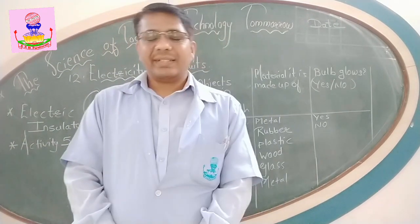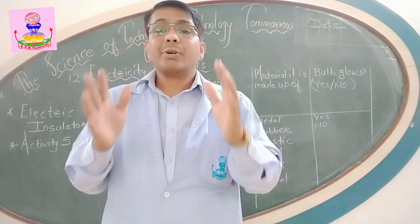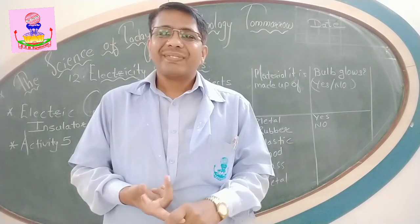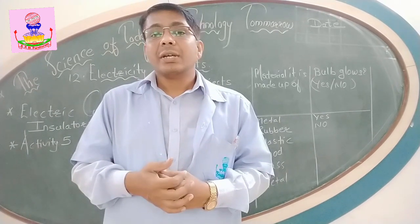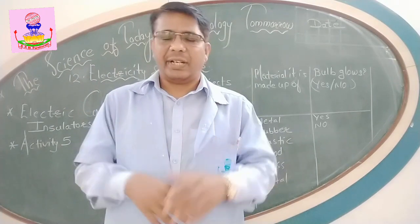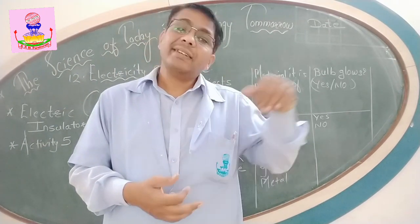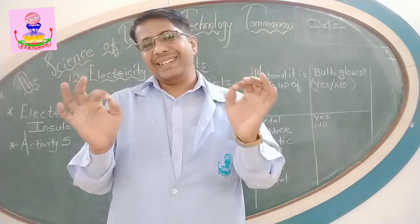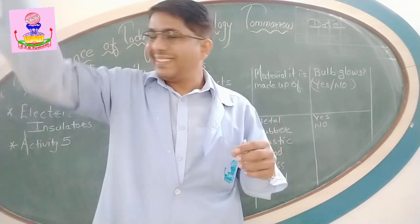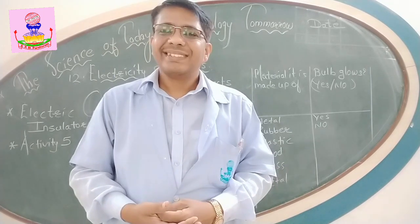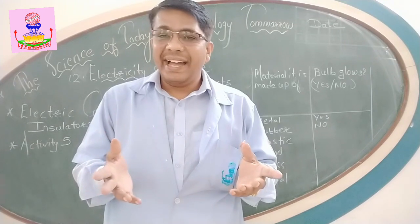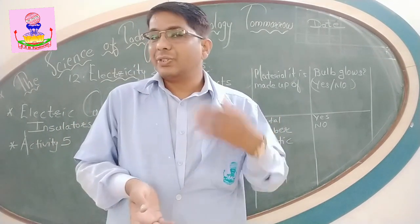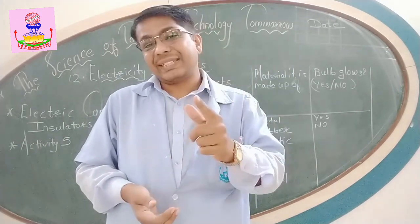The substances which allow electric current to flow through them easily are called good conductors of electricity. Metals — all types of metals: copper, iron, gold, silver, and aluminium — are good conductors. Gold and silver are the best conductors, but they are precious metals and too costly. It is not advisable to use them for making wires, even though they are the best conductors. So we use copper and aluminium.